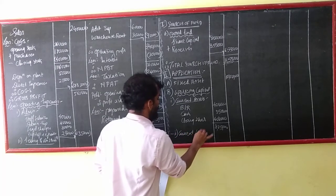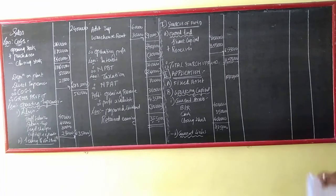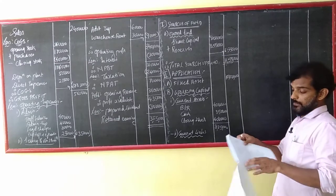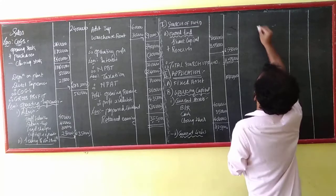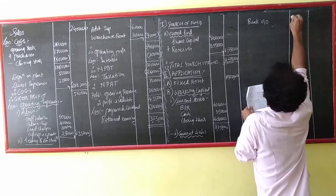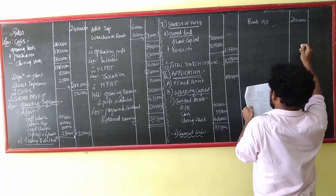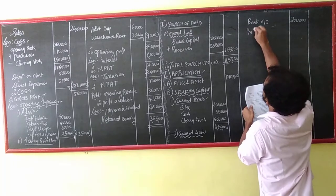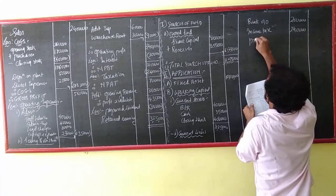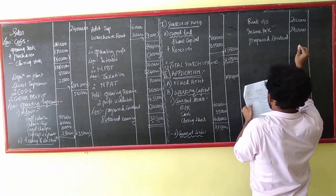Current liabilities. Bank overdraft — they have given 2 lakhs. Then proposed dividend and income tax. Income tax will have 14,000. And proposed dividend — proposed dividend is 18,000.